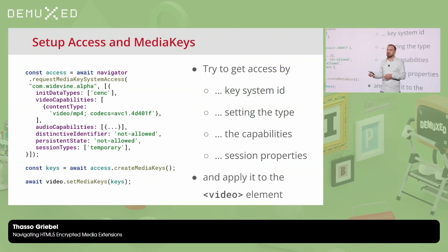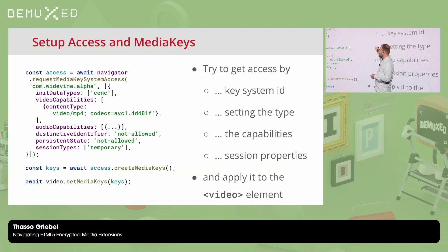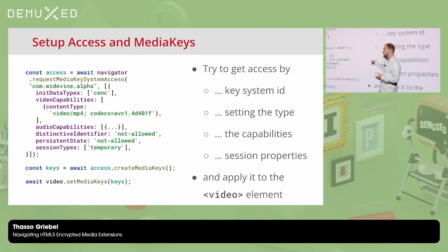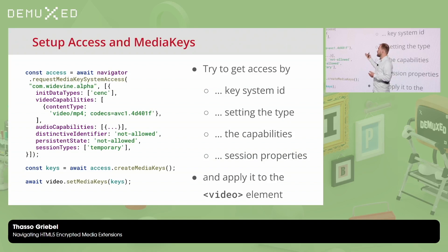Let's look at how to navigate EME. We start with the navigator. From the navigator, we can get access to MediaKeySystemAccess — the first touch point with the DRM system. Here's also where the not-so-well-specified part begins, because it starts with the first parameter: expressing your desire for a specific key system. In the examples in this talk I'm focusing on Widevine, but this applies to Apple's FairPlay or Microsoft's PlayReady — you just give it a different identifier to tell the system what kind of CDM you'd like to initialize.